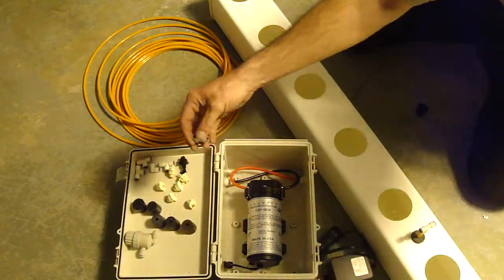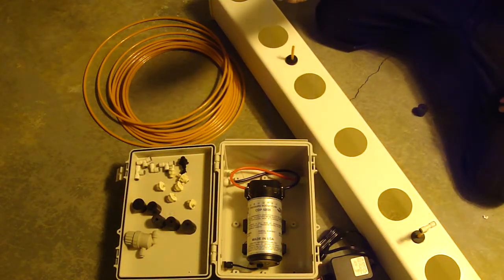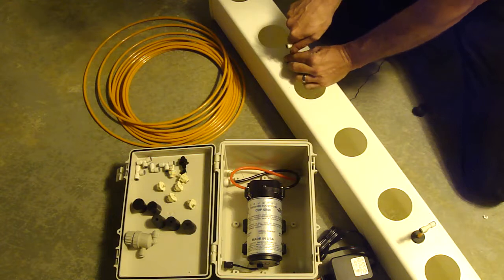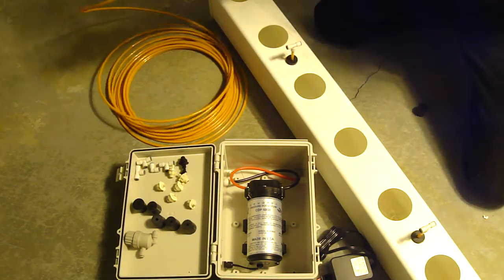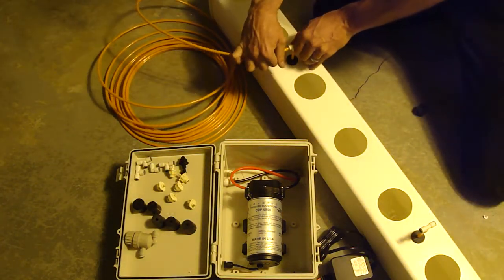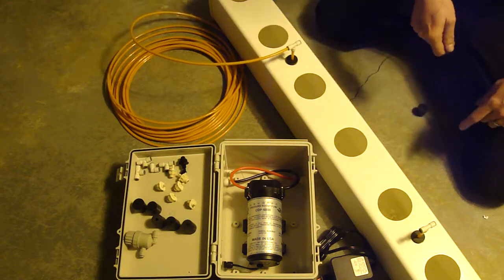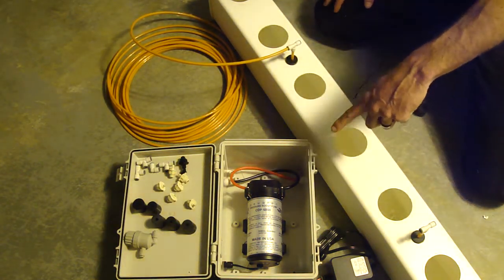And then your kit is going to come with T's. The quick connect T's and an elbow. So we'll put one of these T's on here. And with your 30 feet of tubing you're just going to plug that in right there. Run the other side either to your other sprayer heads or back to your pump.